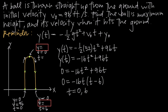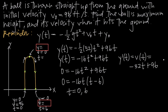Next we take the derivative of the position function. Remember that the derivative of position is velocity. So y prime of t, which equals v of t, is the derivative of negative 16t squared plus 96t, giving us the velocity function v of t equals negative 32t plus 96.